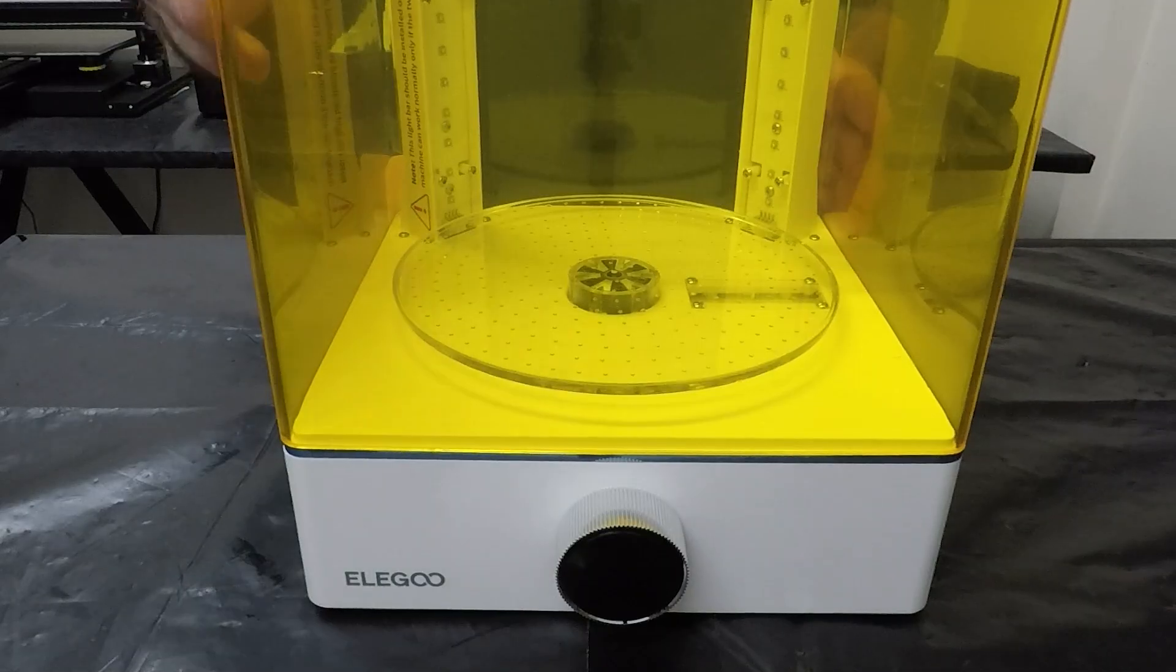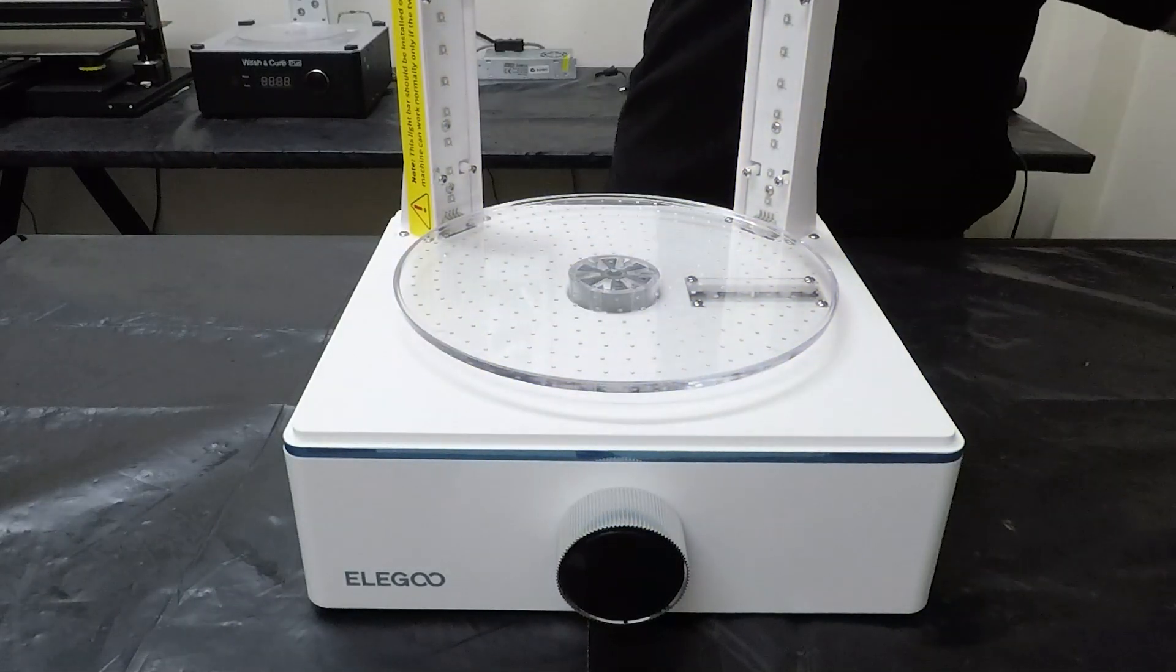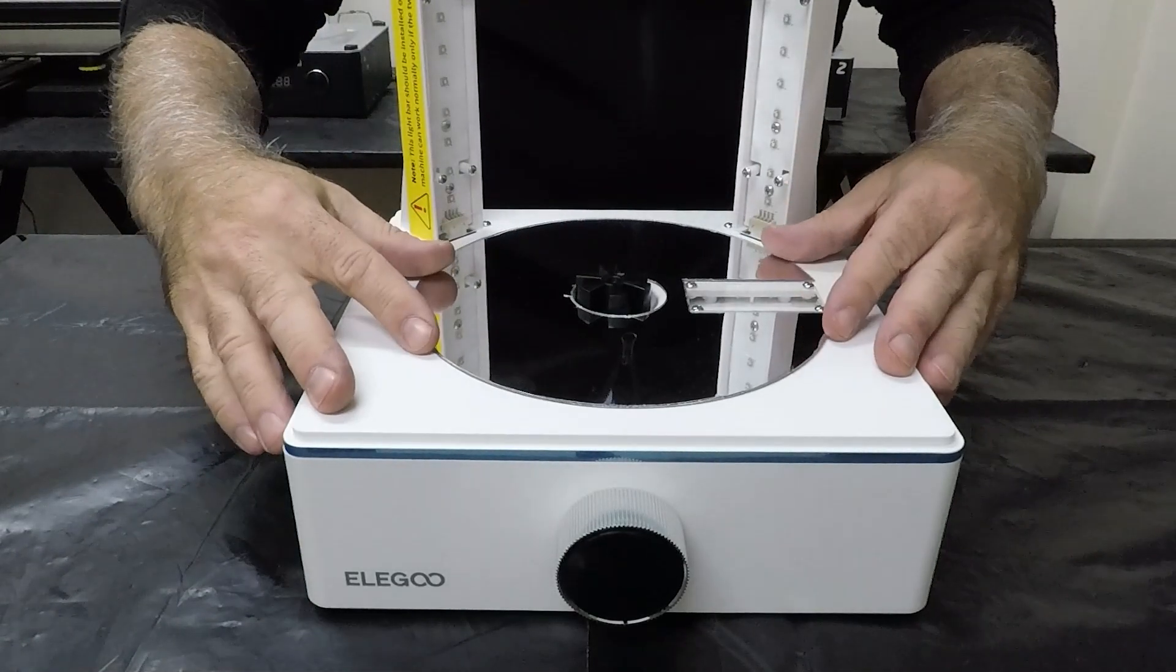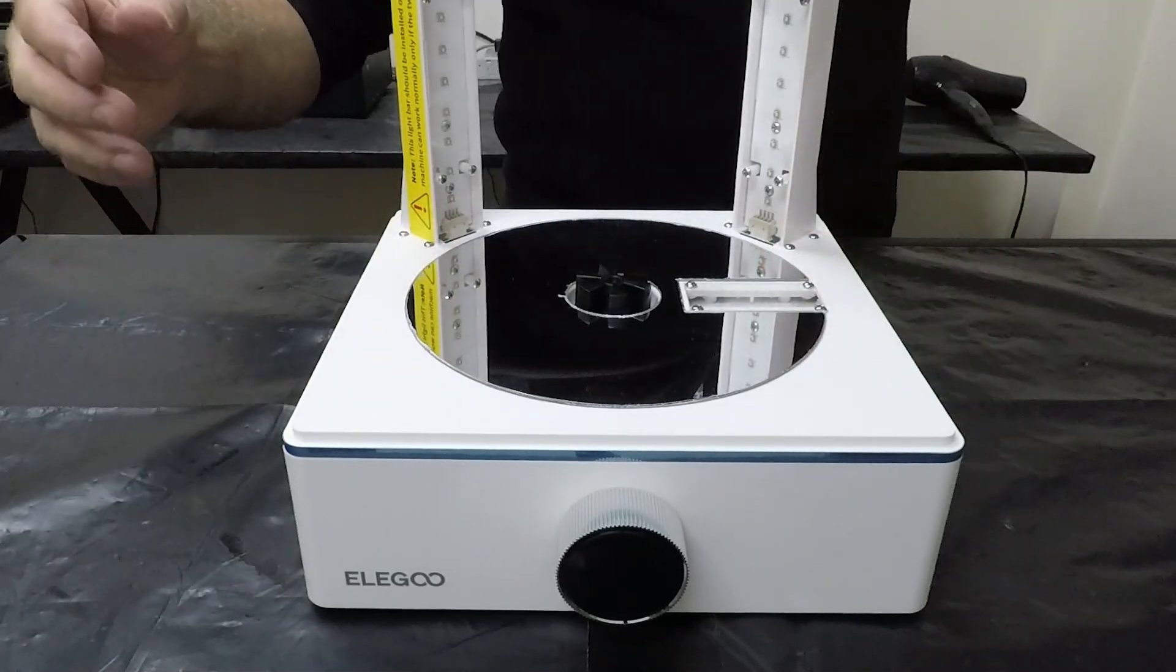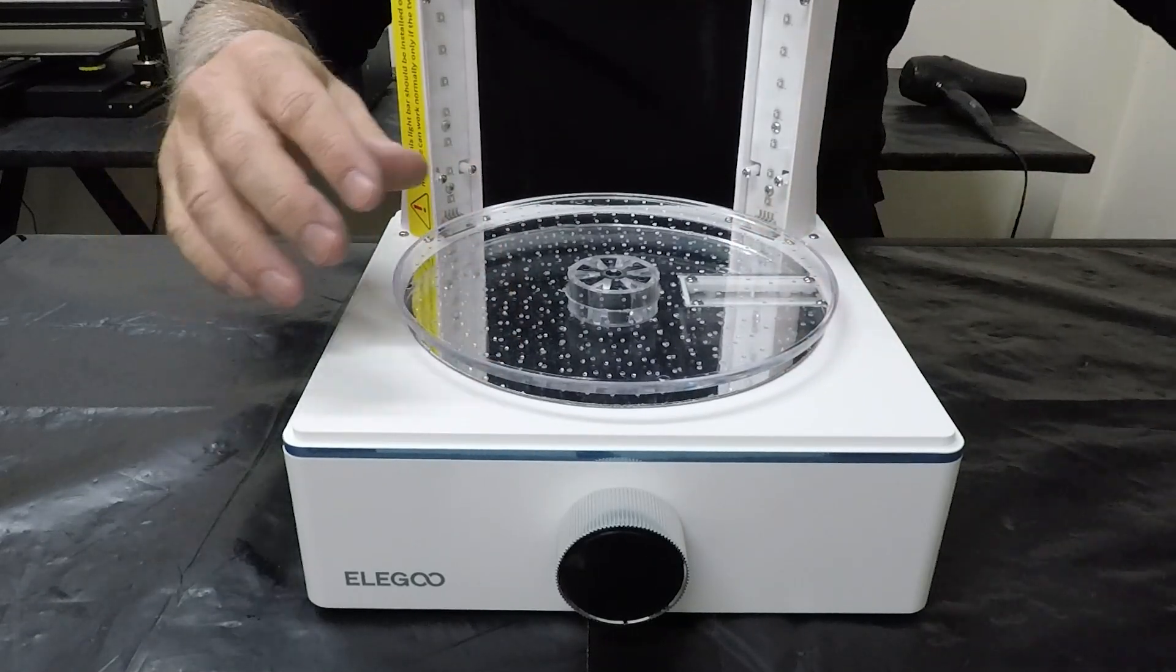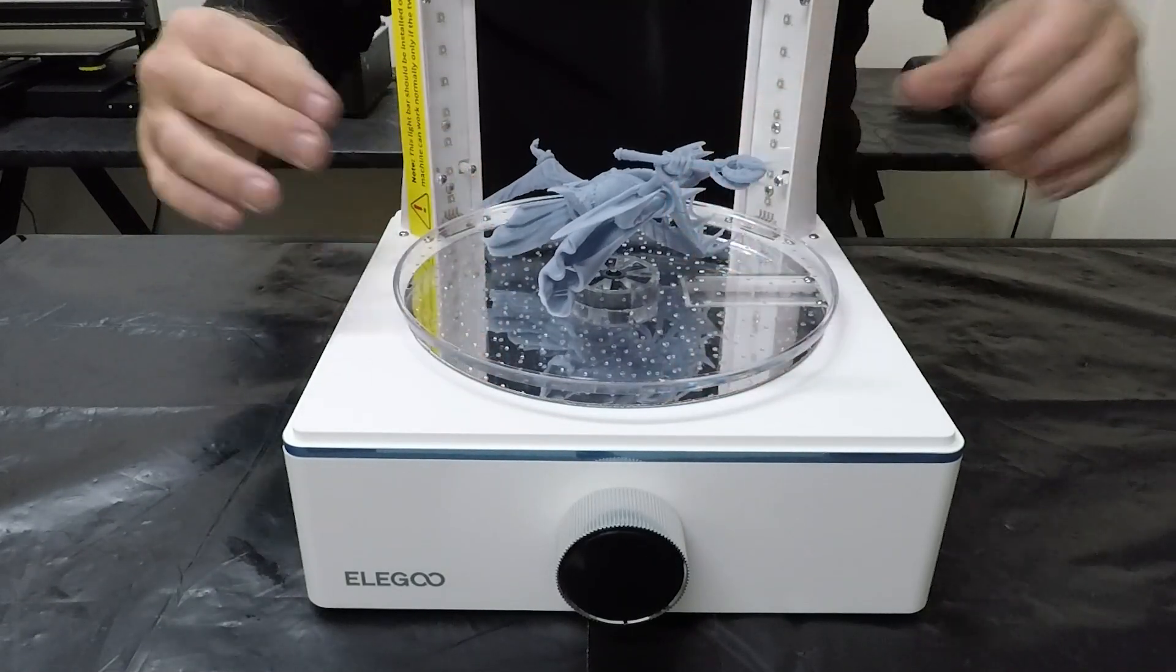My concern was simply with the smaller prints that don't take as much curing time that it wasn't getting enough UV light on it. Pretty straightforward - you just take off the plate and the mirror just pops on top. After testing this a number of times on some smaller figures I was much more confident in the prints coming out with a nice even curing on it.